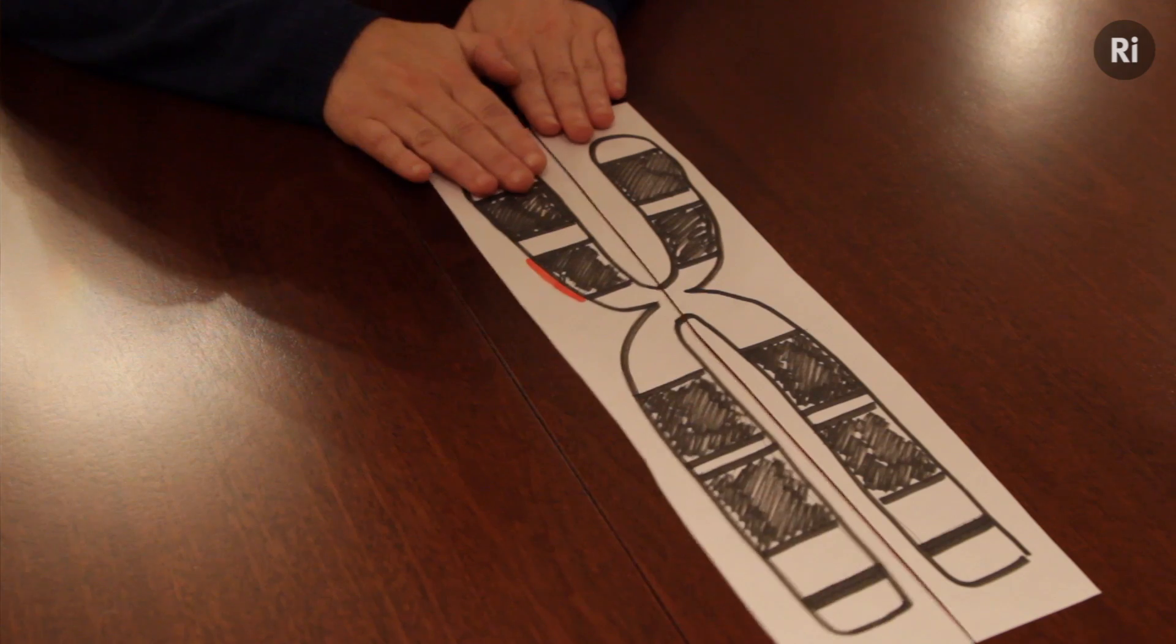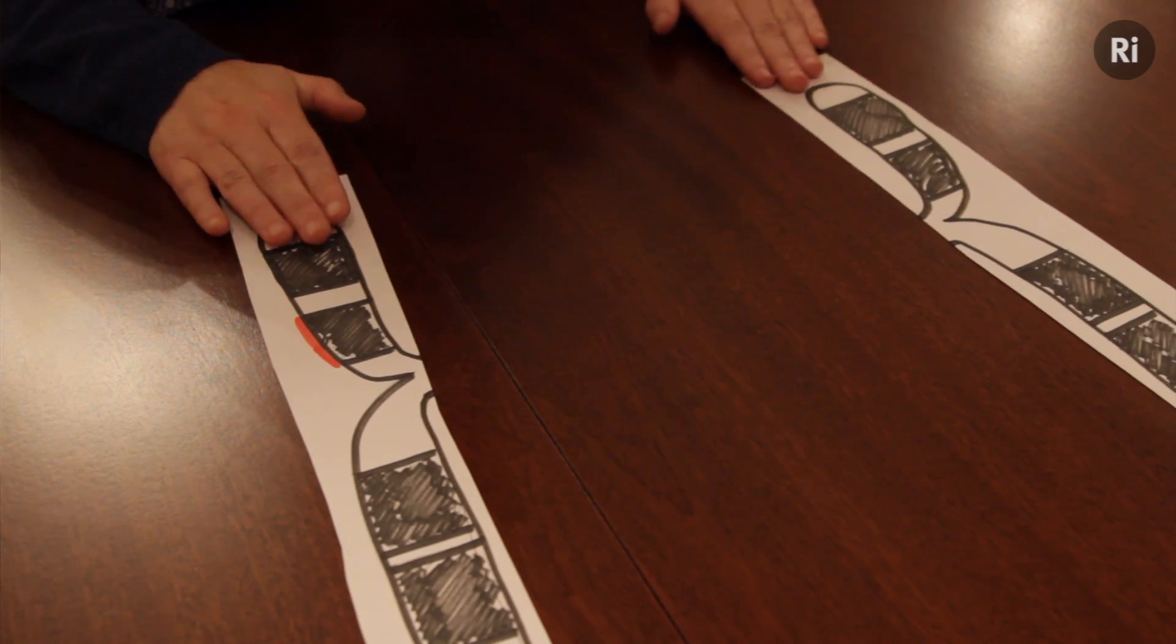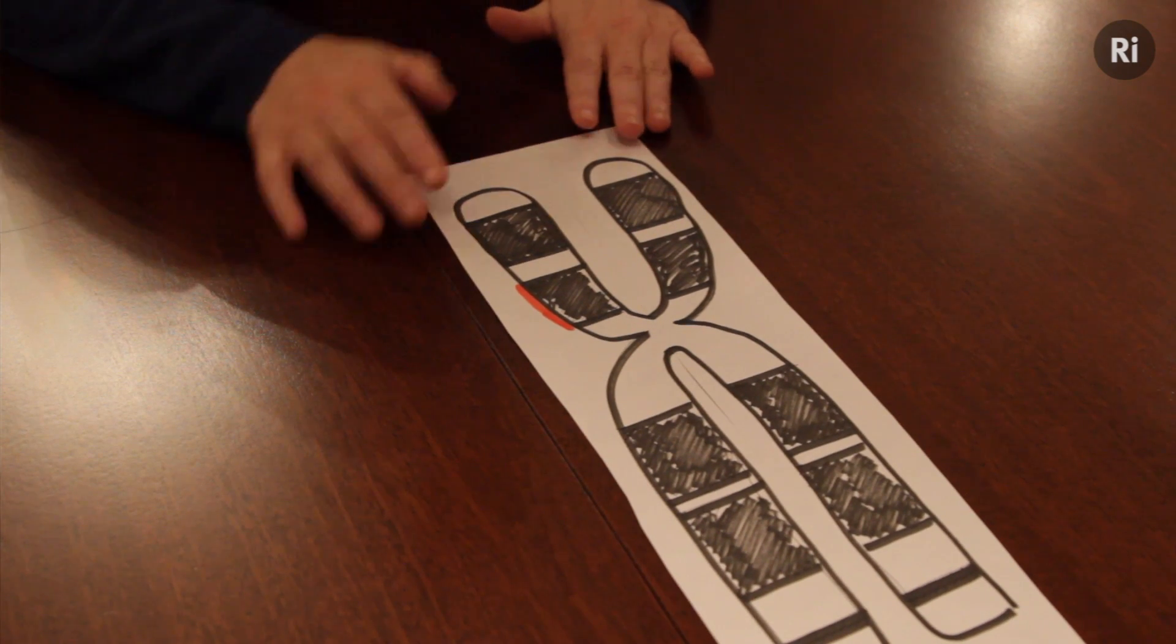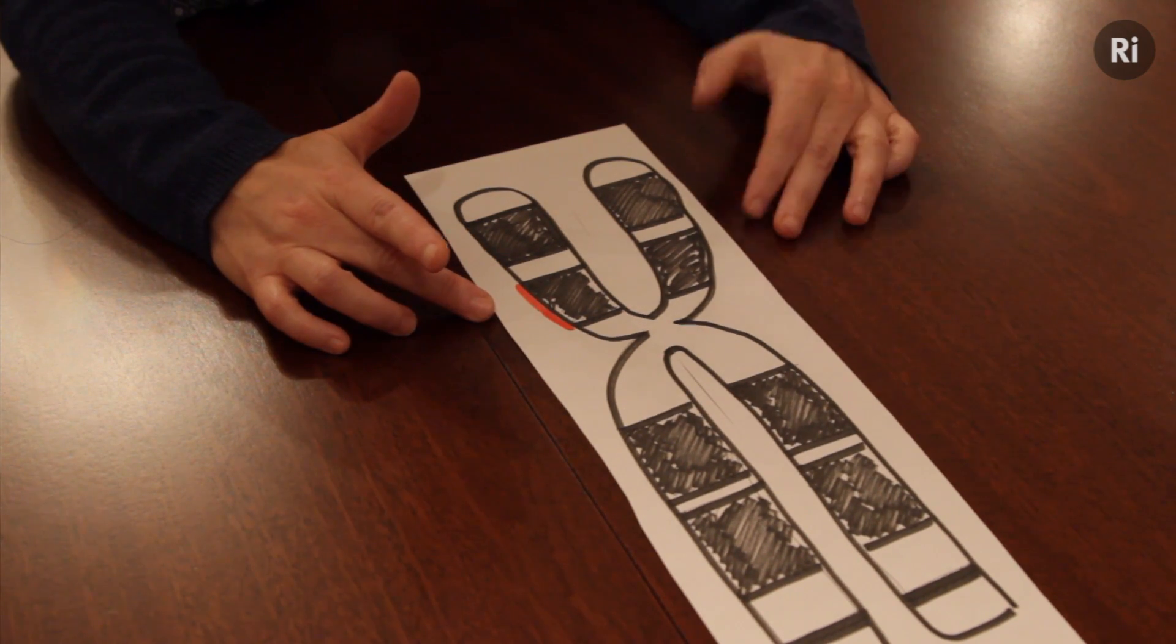If we think about what happens when a child is born, then you have one of these little arms that comes from the mother and one of these arms that comes from the father. They come together and they have, in exactly the same positions, exactly the same genes. We usually always have two copies of the same gene. And, for the most part, they are always both working. There are a few exceptions. One of them is chromosome 11.